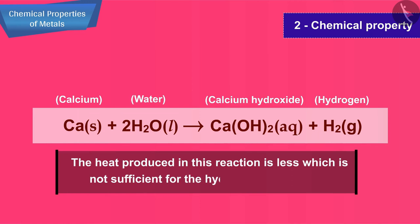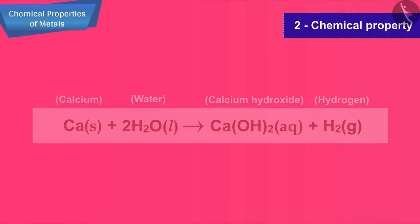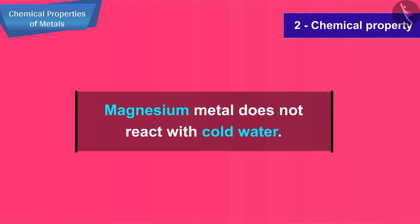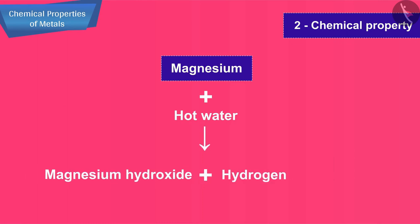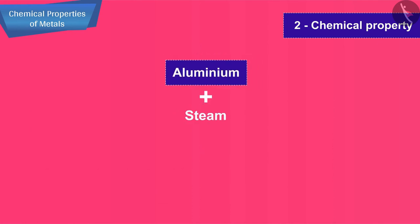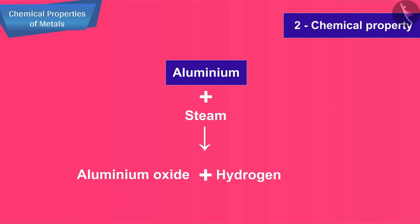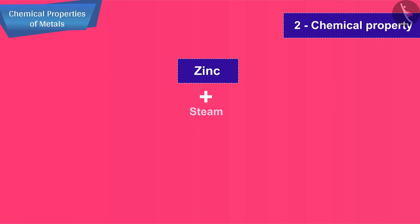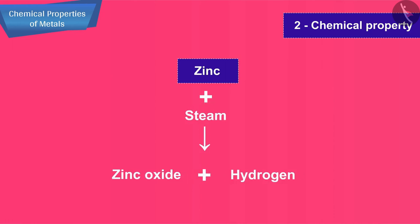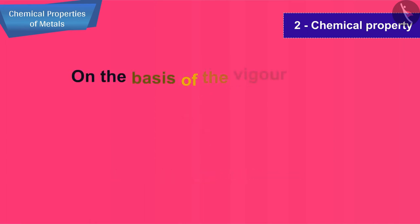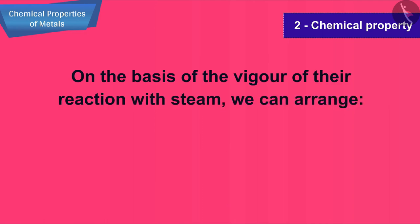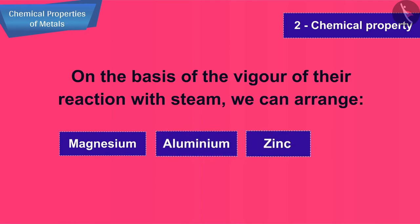The heat produced in the reaction of calcium with water is not sufficient for the hydrogen gas to catch fire. Magnesium metal does not react with cold water; it reacts with hot water to form magnesium hydroxide and hydrogen gas. Aluminium reacts with steam to form aluminium oxide and hydrogen gas. Zinc reacts with steam to form zinc oxide and hydrogen gas. Red hot iron reacts with steam to form iron oxide and hydrogen gas.